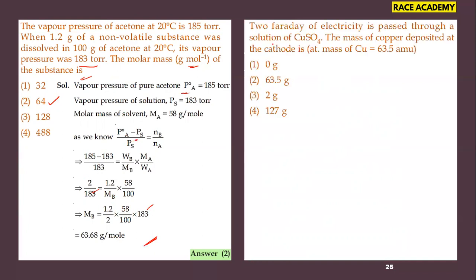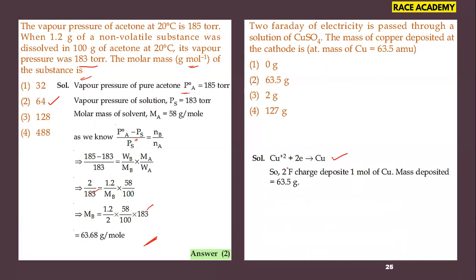Two Faraday of electricity is passed through a solution of copper sulfate. The mass of copper deposited at the cathode is how much? This is asked from Faraday's law. In the copper deposition equation, two electrons are involved — meaning two Faradays. One Faraday deposits one gram equivalent; two Faradays deposits 63.5 g, which is one mole of copper. So the mass deposited is 63.5 grams — the second option is correct.